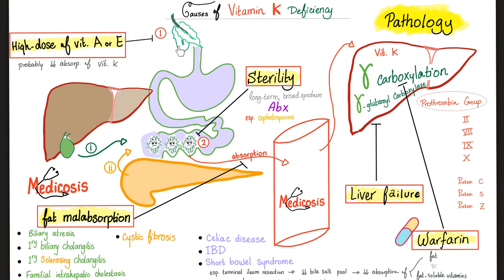Vitamin K has many sources including green leafy vegetables and gut bacteria. It travels from the intestine to the blood via absorption, which requires a robust liver with biliary system, a functioning pancreas, and a competent small bowel. Problems with bile, pancreas, or small intestine cause vitamin K deficiency. Via the portal vein, vitamin K reaches the liver where gamma carboxylation of protein C, S, Z, and factors 2, 7, 9, and 10 occurs — carried out by the enzyme gamma glutamyl carboxylase, which requires reduced, active vitamin K. Epoxide reductase activates vitamin K; warfarin inhibits epoxide reductase.